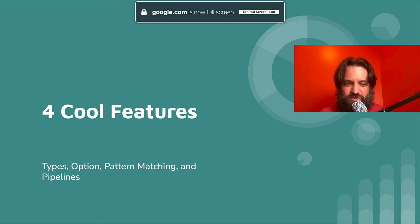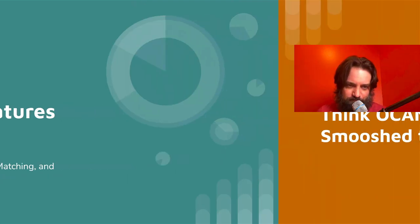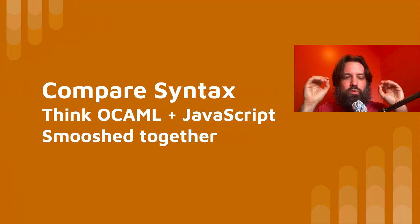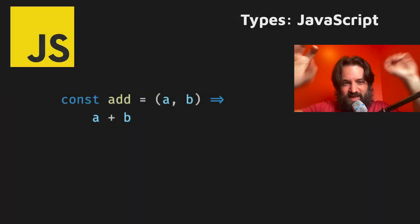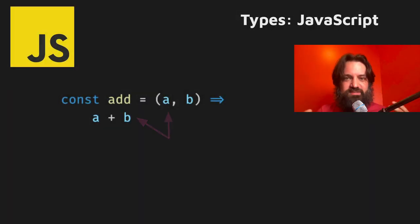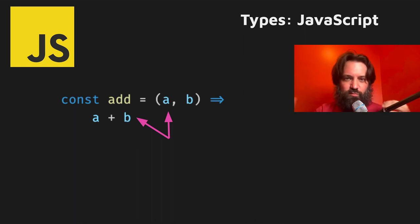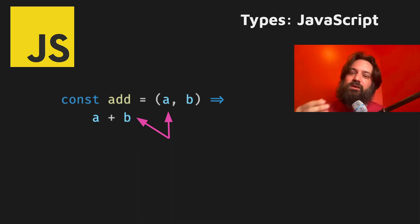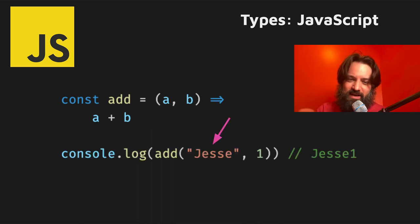Let's talk about the four cool features I found with ReScript. Think of the syntax as OCaml mushed with JavaScript. In JavaScript, types are runtime-identified — at runtime it sees a string, sees an int, and does things with operators. There's no compile step. If you have an 'add' function with A and B and pass a string instead of a number, JavaScript being crazy will add a string to a number and give you a result — sometimes useful, sometimes 'what in the world, that's not what I meant.'